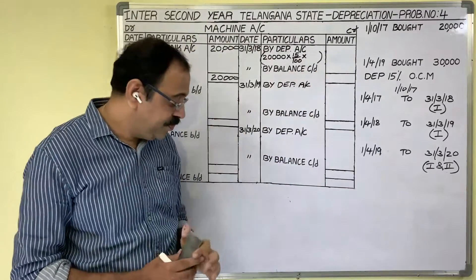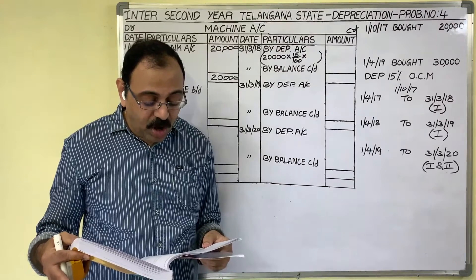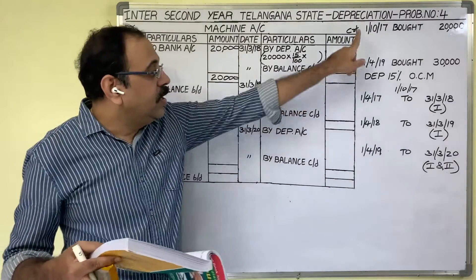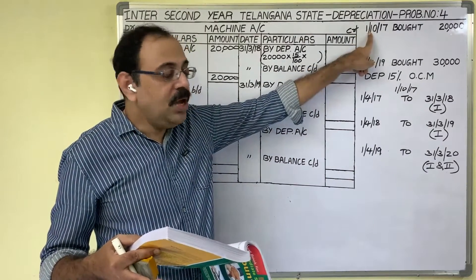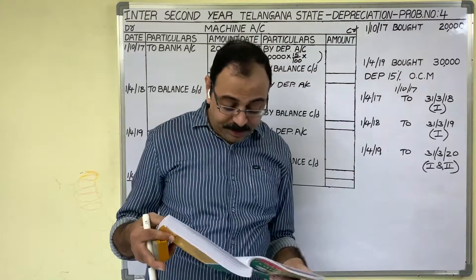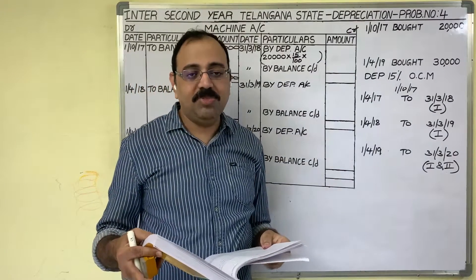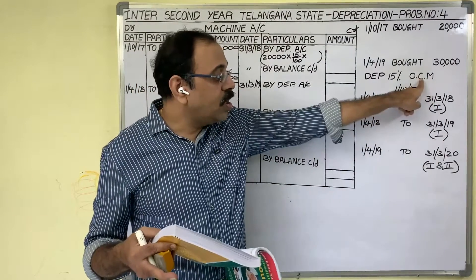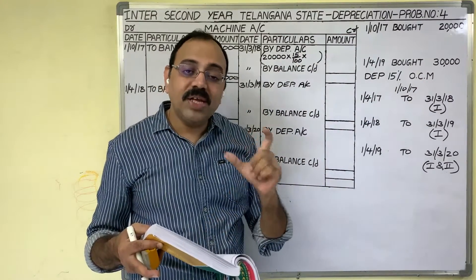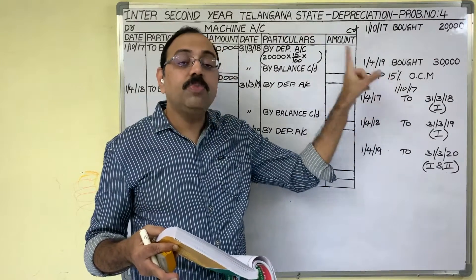Let us start this problem. The question is: Rajesh and Sons purchased a machine on 1st October 2017 for 20,000 rupees. Depreciation is provided at 15% on original cost method. Original cost method is also known as straight line method or fixed installment method. Every year at the rate of 15% we should provide the depreciation.